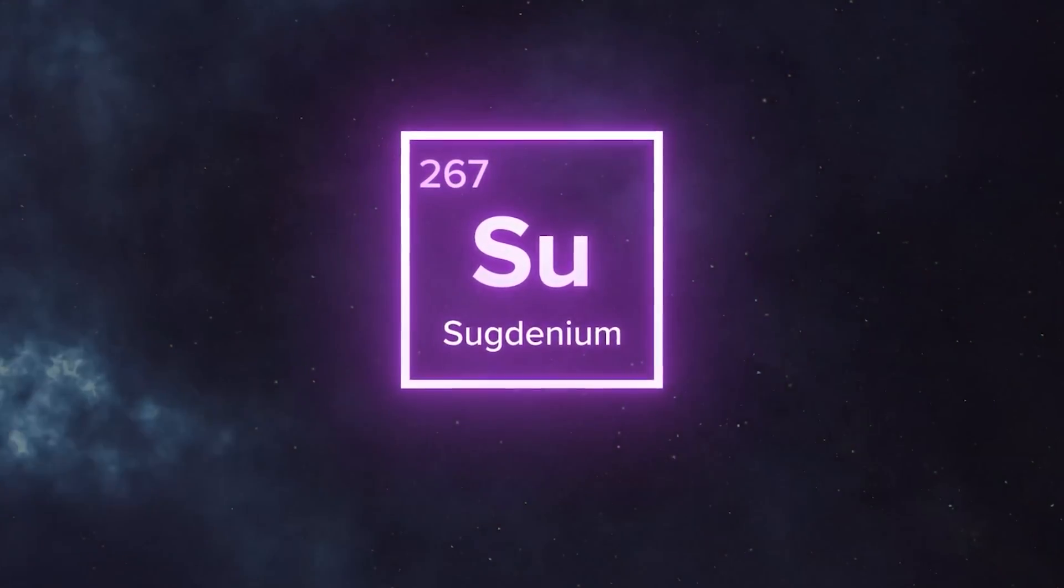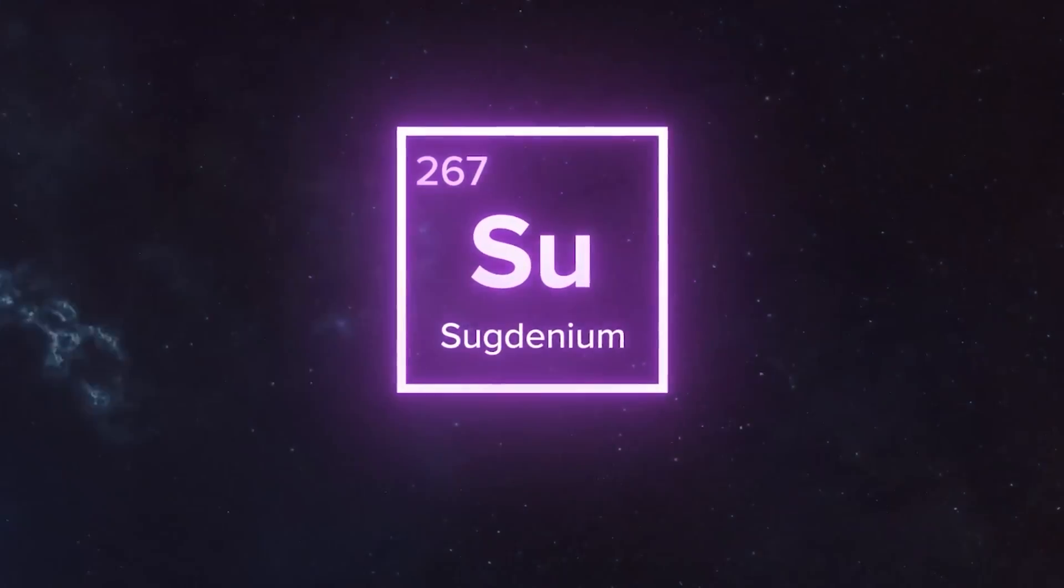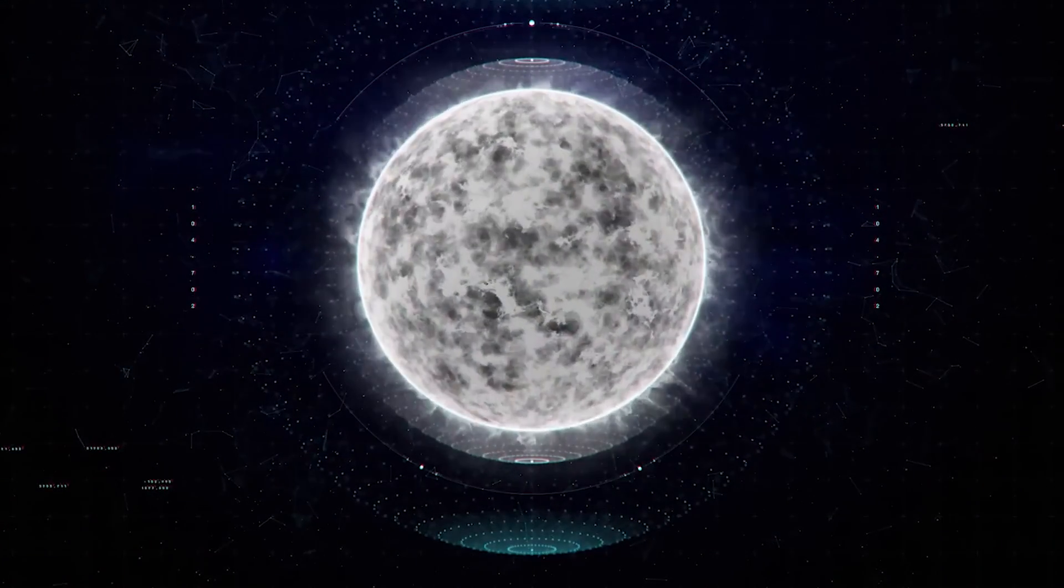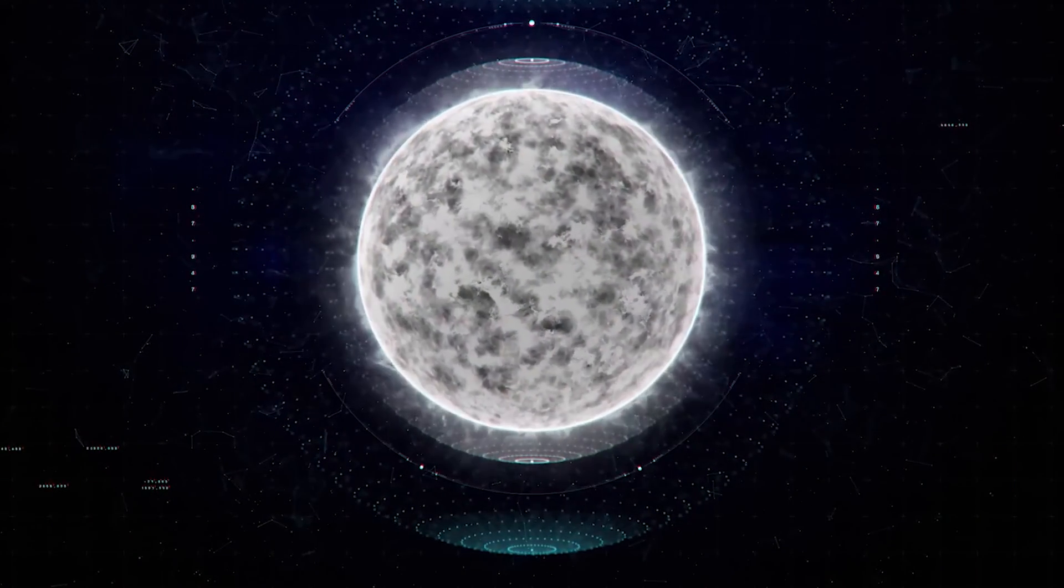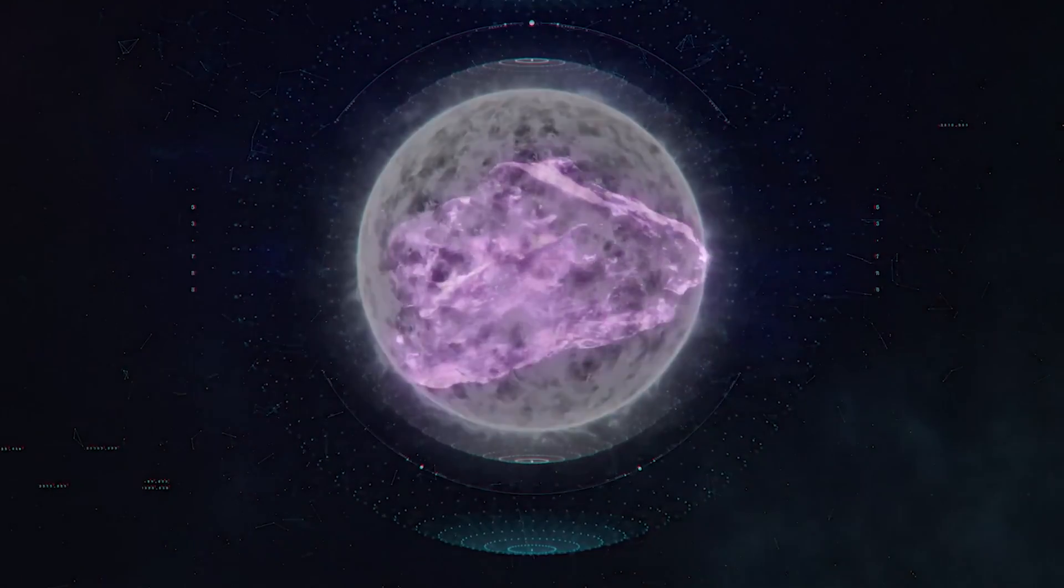Sugdenium is the 267th element, and it's very amazing. It's mildly radioactive, highly useful in medical imaging, and plays a crucial role in low-temperature fusion. Plus, it glows a beautiful shade of violet.